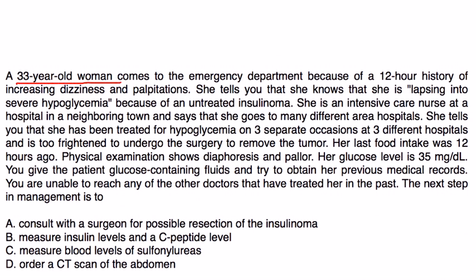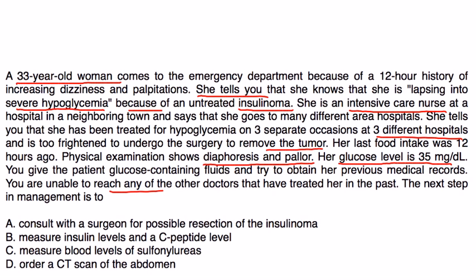Clinical vignette one: A 33-year-old woman comes to the emergency department with a 12-hour history of dizziness and palpitations. She states she is experiencing severe hypoglycemia due to an untreated insulinoma. She is an intensive care nurse who says she has been treated for hypoglycemia on three separate occasions at different hospitals and is too frightened to undergo surgery. Her last food intake was 12 hours ago. Exam shows diaphoresis and pallor, and glucose level is 35. You give glucose-containing fluids but are unable to reach any of her previous treating physicians.